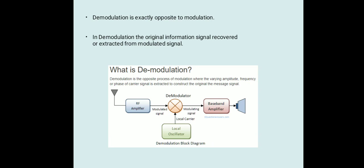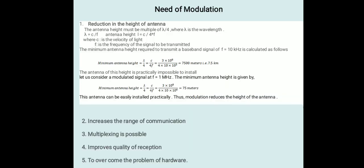The demodulation system consists of an RF amplifier, local oscillator, demodulator, and then a baseband amplifier. What is the need of modulation? First, we can see the reduction of height of antenna. The height of the antenna is reciprocal of its wavelength. If wavelength increases, height of antenna decreases. That is, if the frequency increases, height of antenna decreases. Hence, if we modulate a low frequency signal with a high frequency carrier signal, then the height of the antenna automatically decreases.